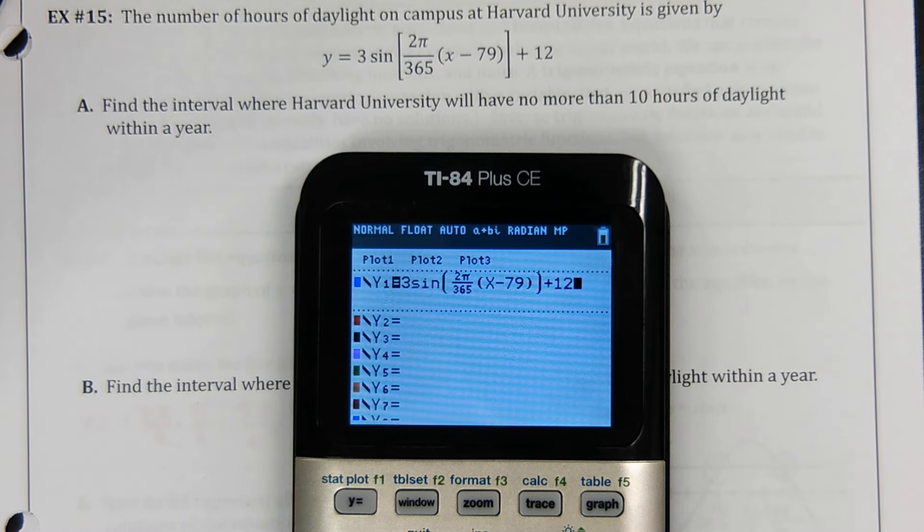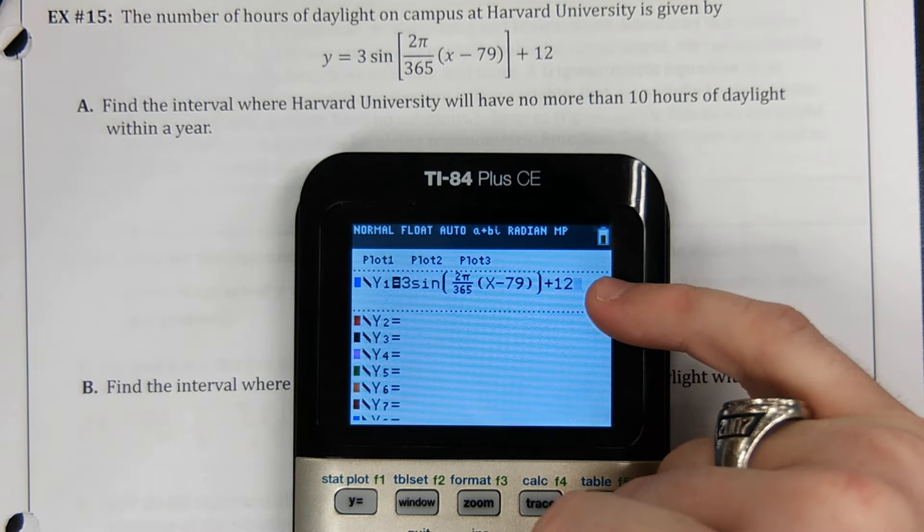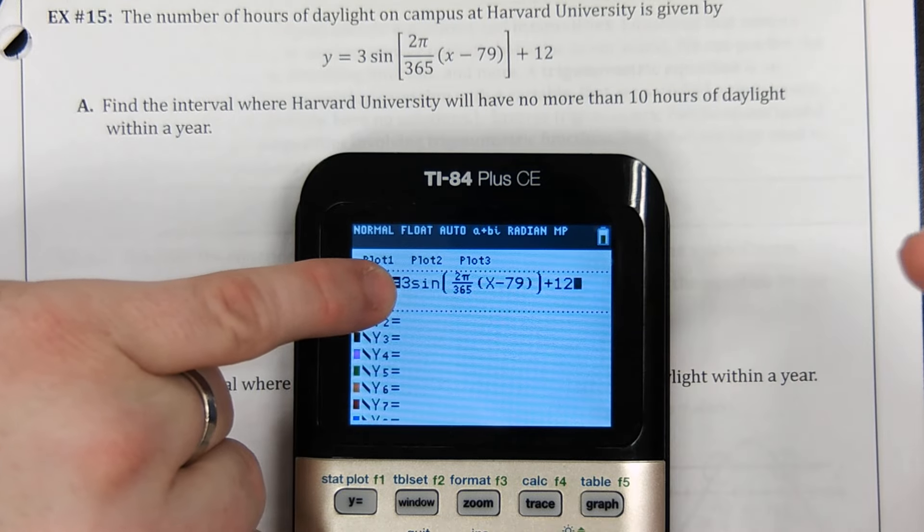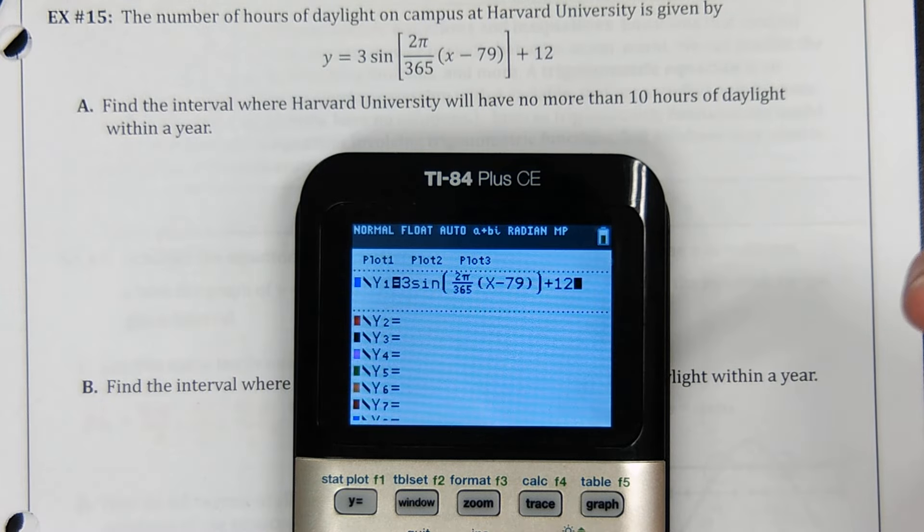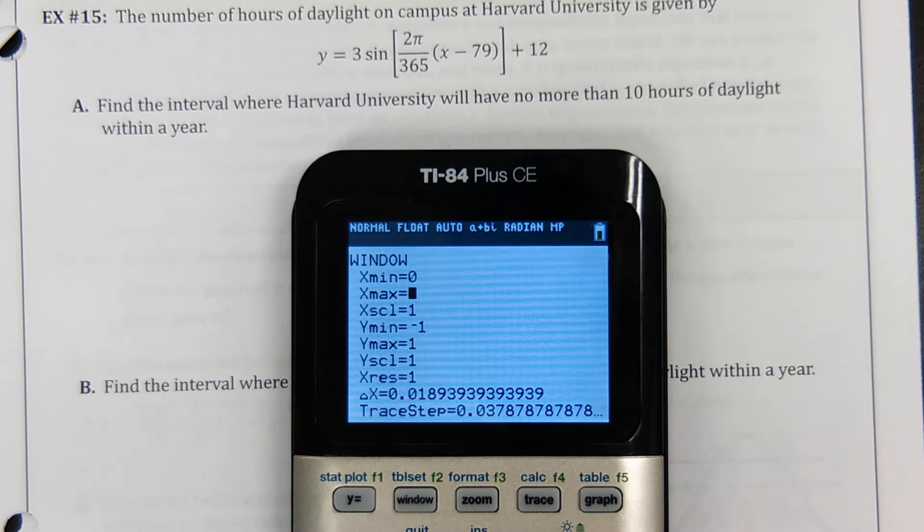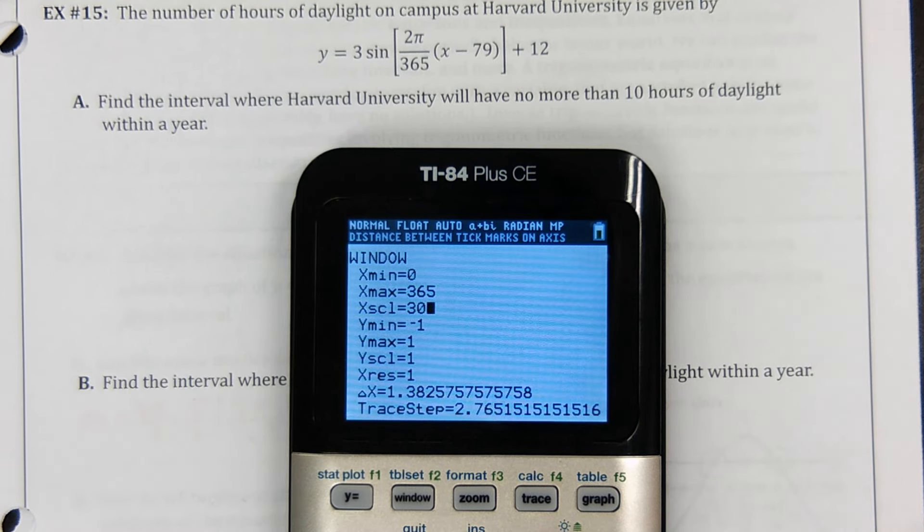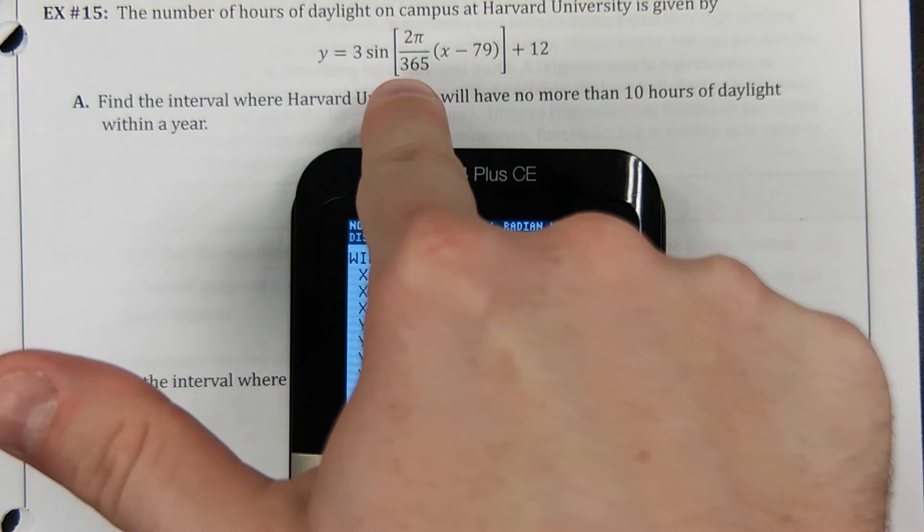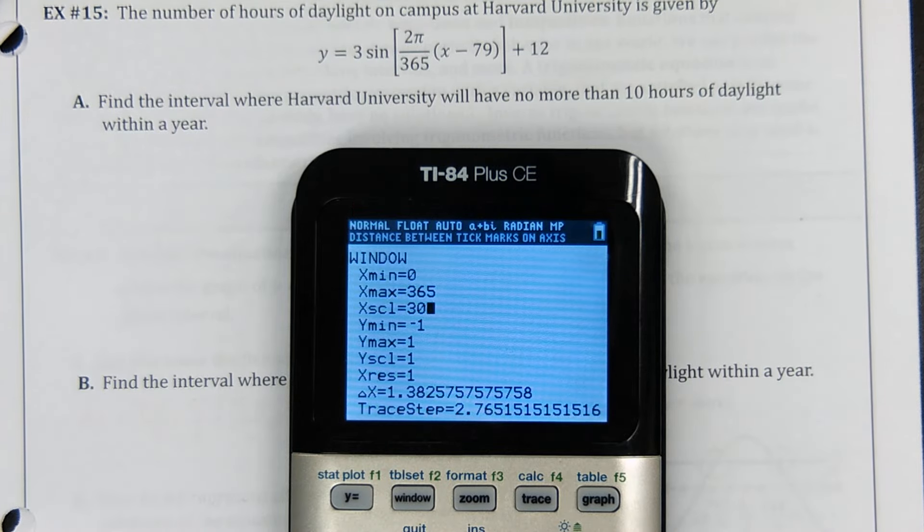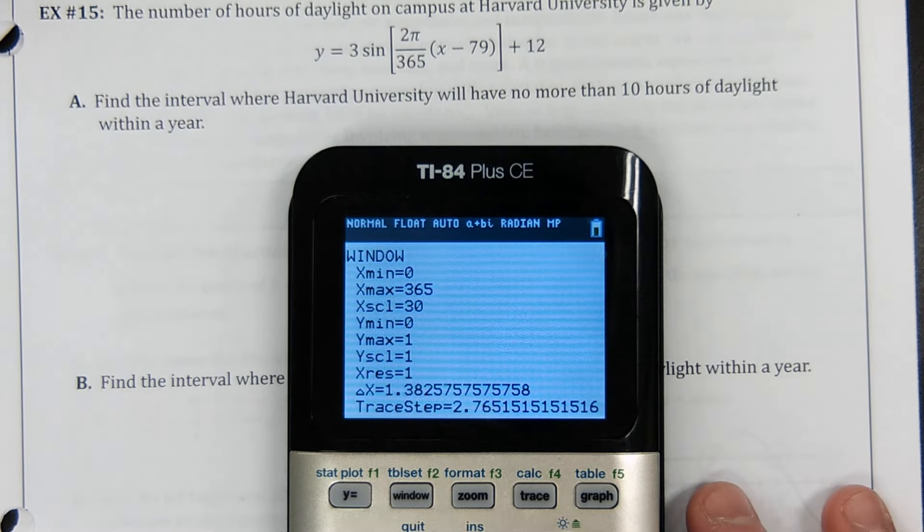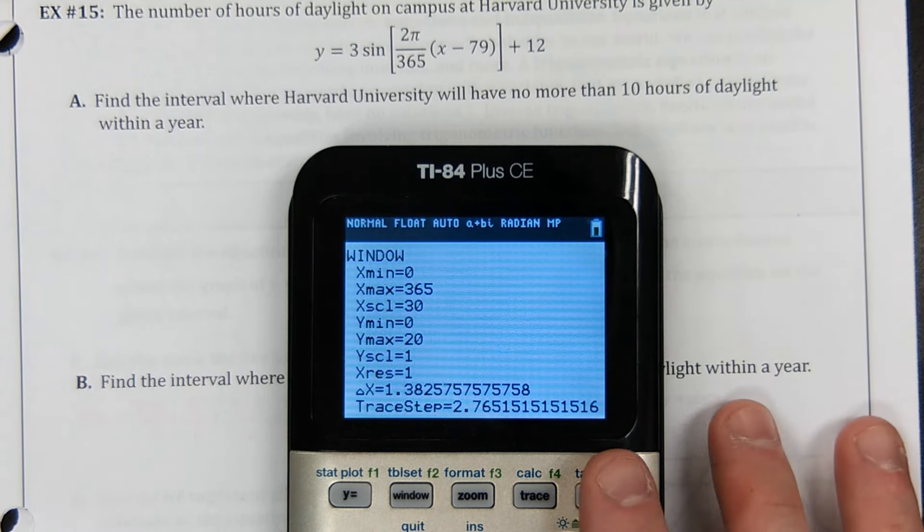Then we need to pick our window appropriately. We already know that we're looking at one year, so I'm going to go from 0 to 365 on the X axis. But my Y values, I'm shifted up 3, excuse me, up 12 with an amplitude of 3. So I've got a maximum of 15 and a minimum of 9. So what do you think? 0 to 20 just so we can see the whole wave? So from 0 to 365, we don't want 365 tick marks, so go by 30s, so it's roughly a month. It's not a leap year because it says 365. Leap years have 366 days. And Y minimum, 0 hours of daylight. Y maximum, 20 hours of daylight. And hit graph.